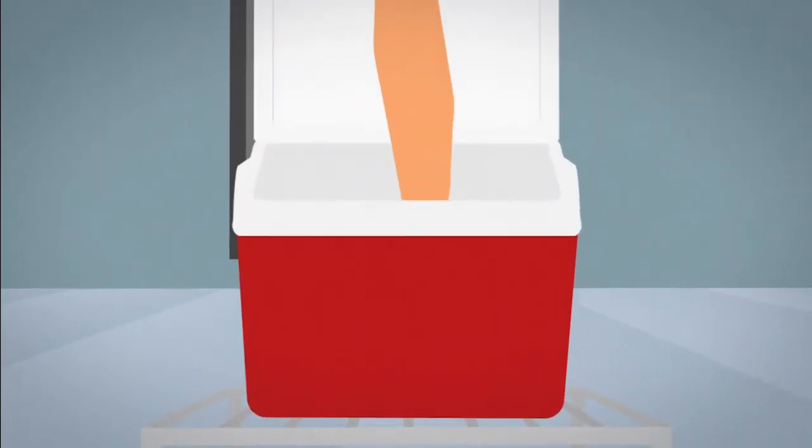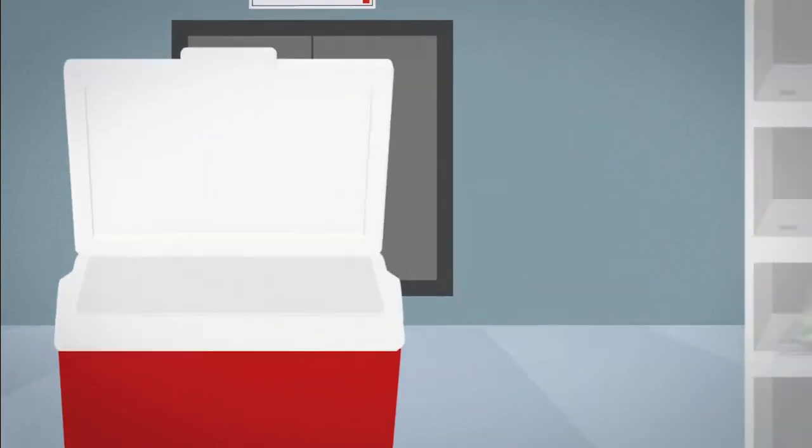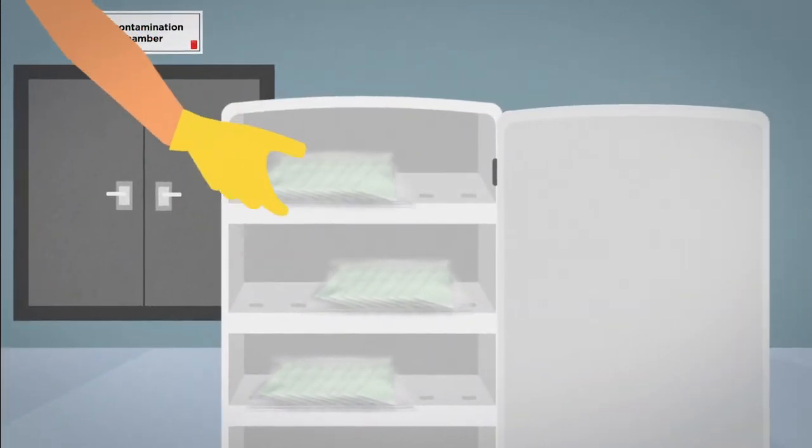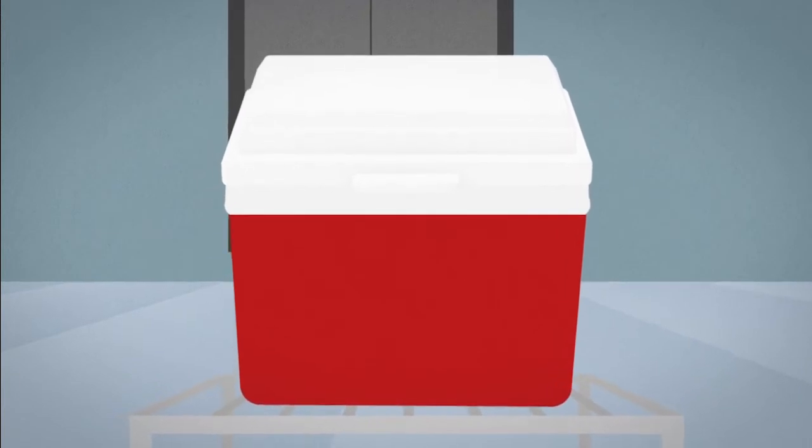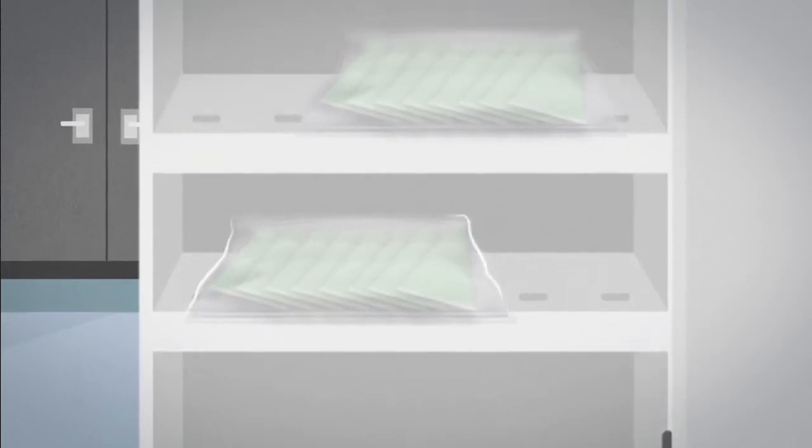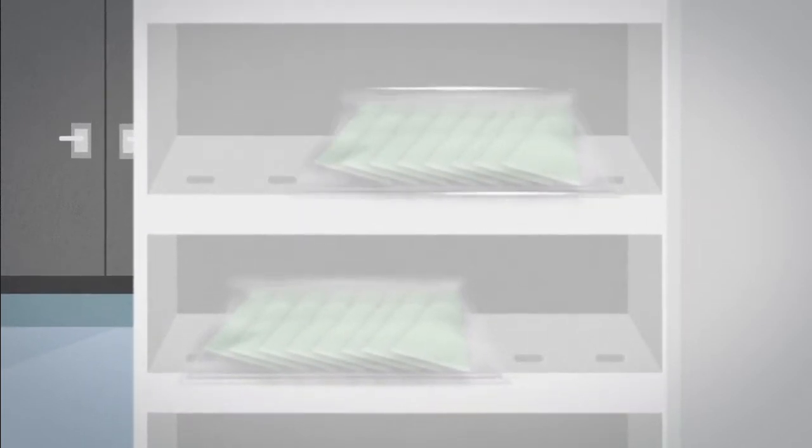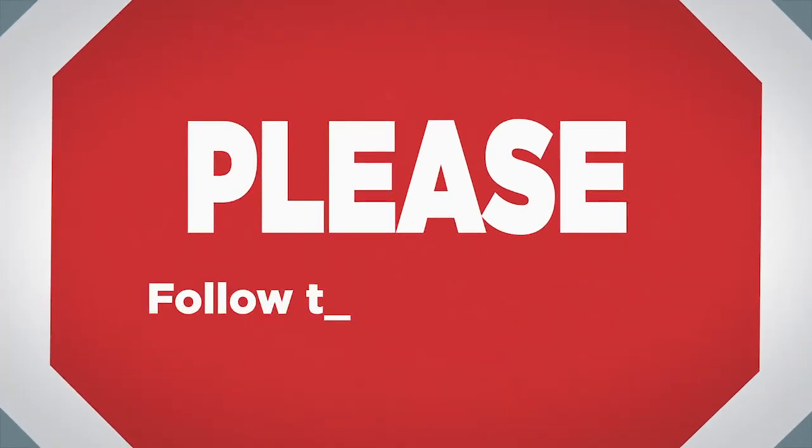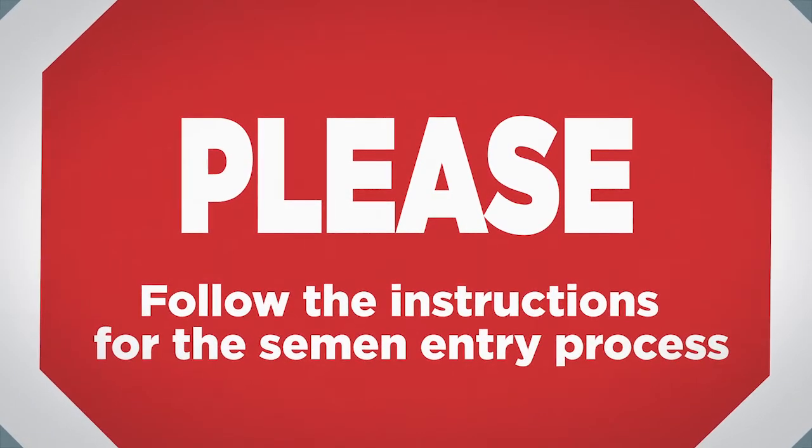When the introduction is not immediate, store semen doses in the semen fridge in the dirty area. The cooler or external packaging sent from the GTC must remain in the dirty area. Semen doses must only enter through a double-bag technique. The semen entry process must comply with the following steps.